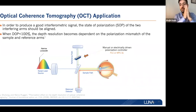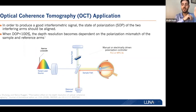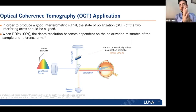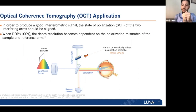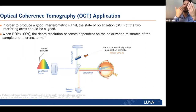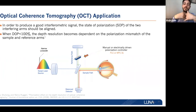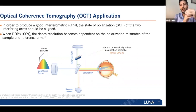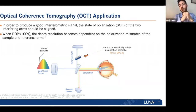In optical coherence tomography, which is an interferometer-based technique, you split the signal into a reference signal and sample signal. The reflected signal from your sample interferes with your reference arm to generate an interference pattern, and from that you can determine the location and build a 2D or 3D image of your sample. It was found that if the degree of polarization is less than 100 percent, the depth of resolution is highly dependent on polarization mismatch. Before interfering two signals, it is highly desirable that the states of polarization are aligned — using an inline polarization controller in one arm highly improves measurement accuracy.